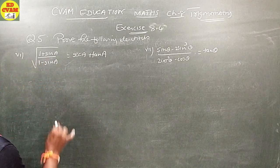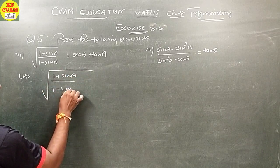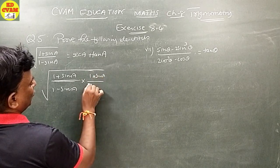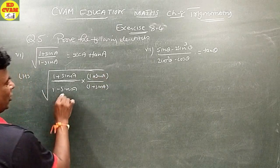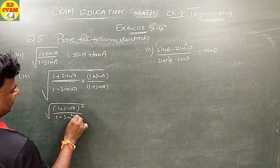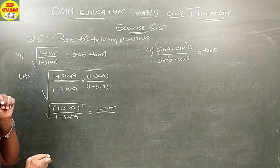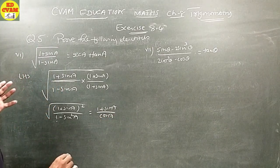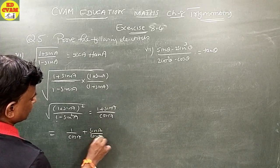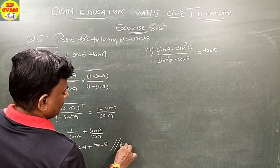Question 5 identity 6, LHS: square root of (1 plus sin A) upon (1 minus sin A). Multiply numerator and denominator by (1 plus sin A) as the conjugate. Numerator becomes (1 plus sin A) squared, denominator becomes 1 minus sin squared A equals cos squared A. Taking square root: (1 plus sin A) upon cos A, which separates to 1 upon cos A plus sin A upon cos A, giving sec A plus tan A — which is RHS.